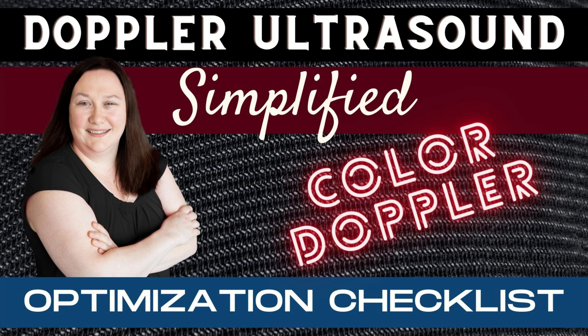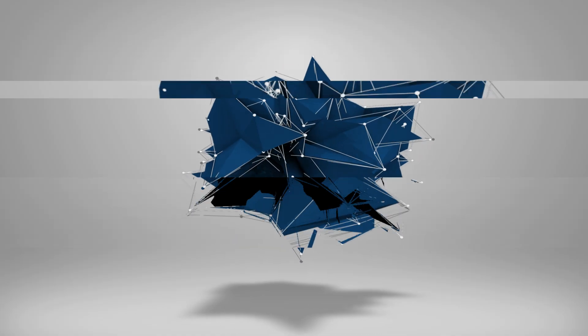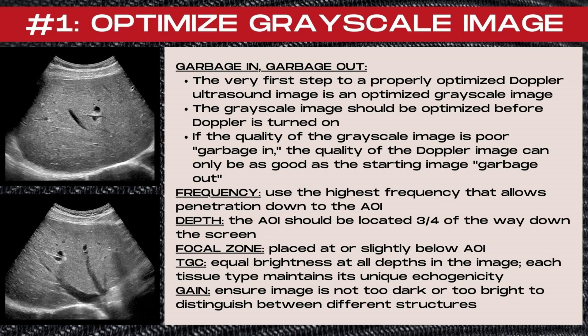On today's edition of Doppler Ultrasound, let's talk about the color Doppler optimization checklist. Step number one in optimizing our color Doppler is to first optimize the grayscale image. I like to think of this as garbage in and garbage out. The very first step to a properly optimized Doppler ultrasound image is to look at your grayscale image, and the grayscale image should be optimized before the Doppler is even turned on.